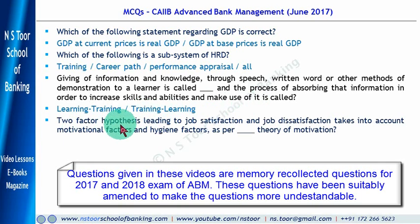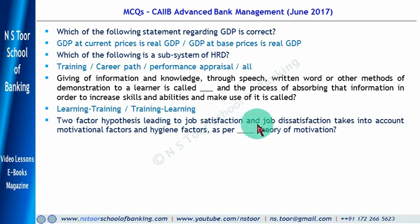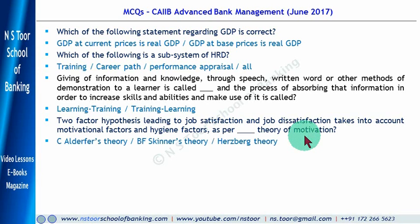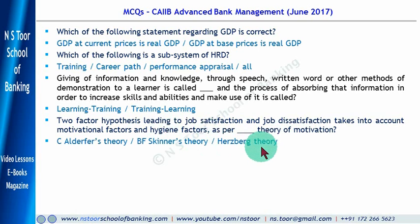Two factor hypothesis leading to job satisfaction and job dissatisfaction takes into account motivational factors and hygiene factors — according to which theory of motivation? There are various theories of motivation. One of those involves motivational factors and hygiene factors, that is the two factor theory. That two factor theory is given by Herzberg's theory.